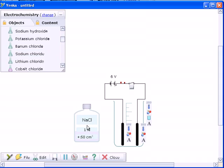For each electrolyte you can set the concentration and volume precisely by clicking on the label and typing a new value.